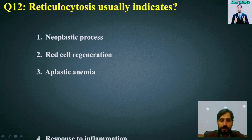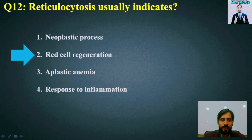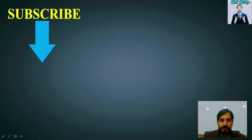MCQ number 12: Reticulocytosis usually indicates which of the following? Options are: neoplastic process, red cell regeneration, aplastic anemia, or response to inflammation. The right answer is option number 2 — reticulocytosis usually indicates red cell regeneration. Thank you so much, dear students, for watching MLT MCQs. Allah Hafiz.